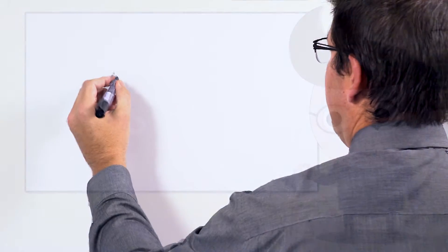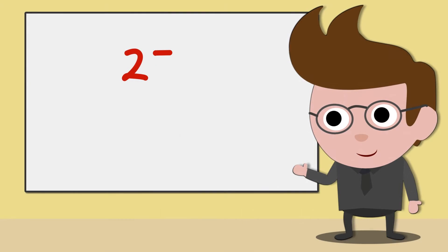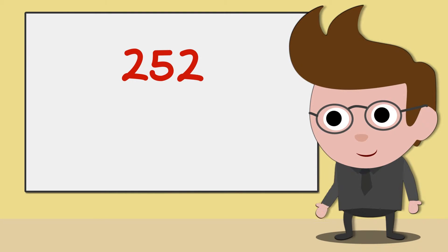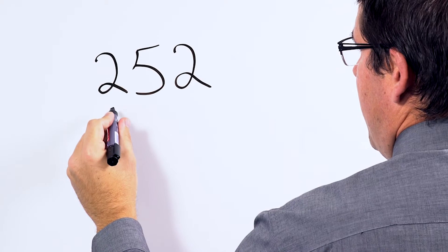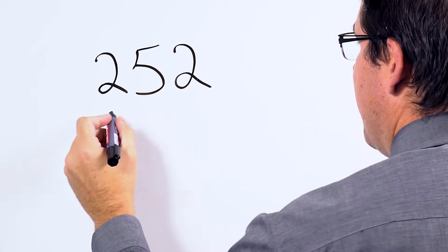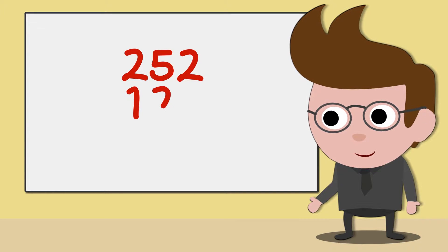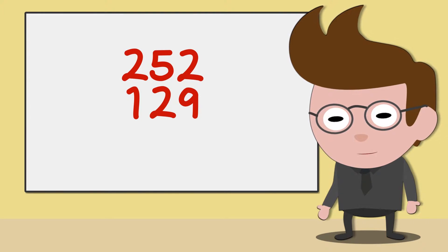Begin by setting out your calculation correctly. Write 252 and write the second number underneath, ensuring your hundreds, tens, and ones are all lined up correctly.